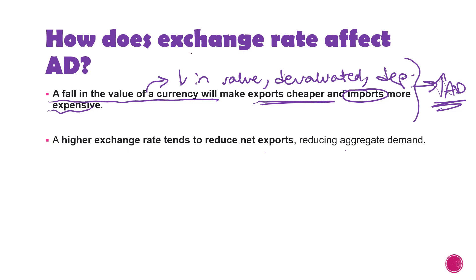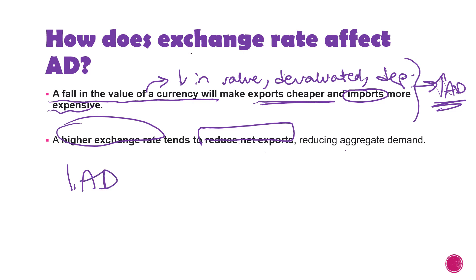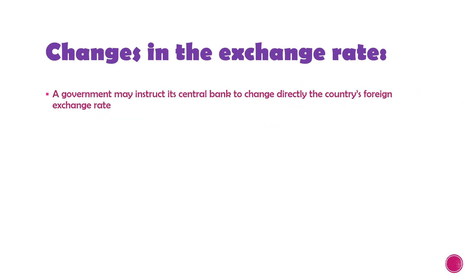When there is a higher exchange rate, there will be a reduction in net exports, meaning a decrease in aggregate demand. A lower exchange rate tends to increase net exports, increasing aggregate demand. A higher exchange rate reduces net exports. Foreign price levels can affect aggregate demand in the same way as exchange rates.